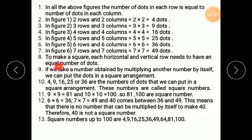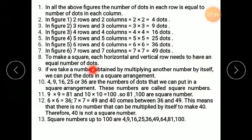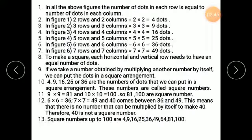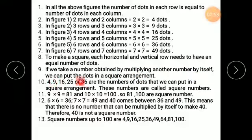To make a square, each horizontal and vertical row needs to have an equal number of dots. So for a square arrangement, the number of dots in a row and in a column must be equal. Otherwise, they will not form a square. If we take a number obtained by multiplying another number by itself, we can put the dots in a square arrangement.